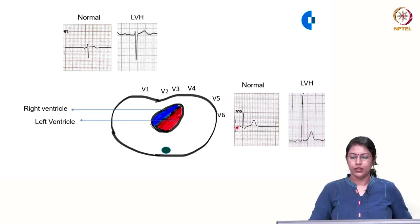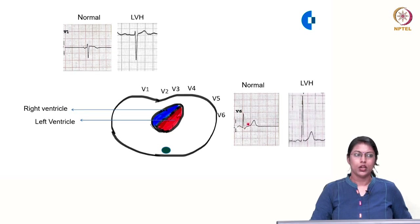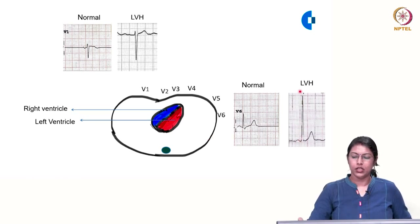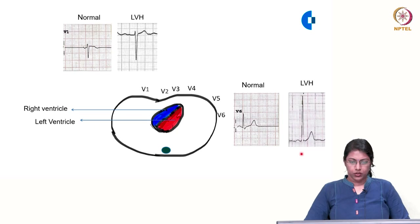In V6, normally there is a tall R wave contributed by the left ventricle and a small S wave contributed by the right ventricle. In left ventricular hypertrophy, the amplitude of this R wave contributed by the left ventricle is increased.